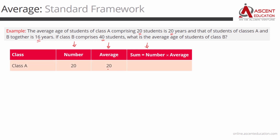For Class A: number of students is 20, average age is 20 years. Sum equals number into average: 20 into 20 equals 400. So the sum of the ages of the 20 students of Class A is 400.